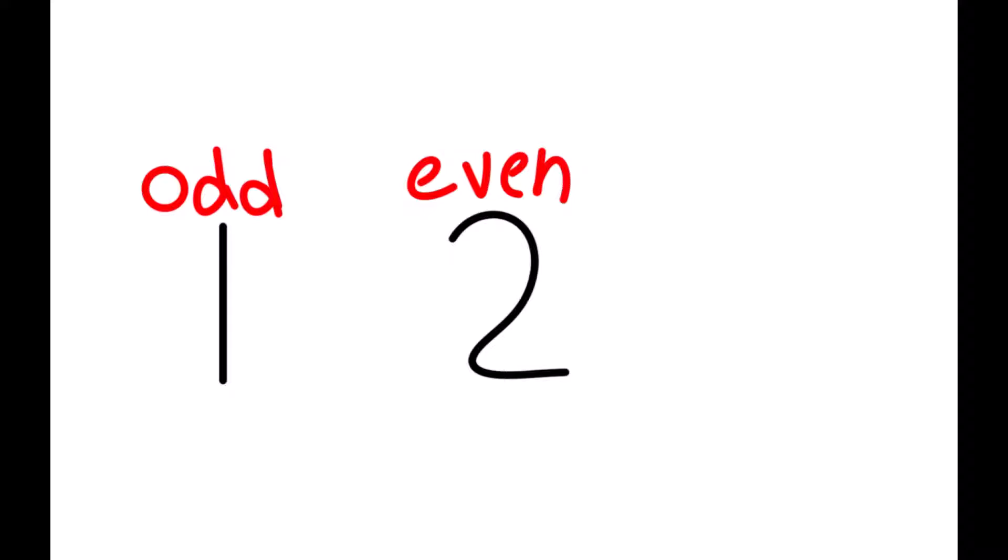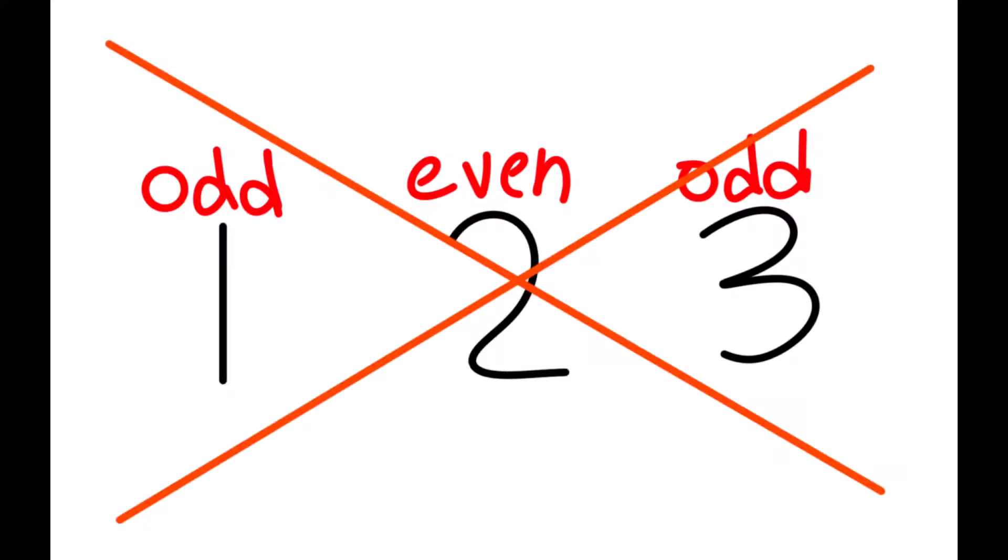And every even number is followed by an odd number. But what if I told you that this might not be the case? No, I'm not saying the sequence of numbers is wrong, or maybe I am.